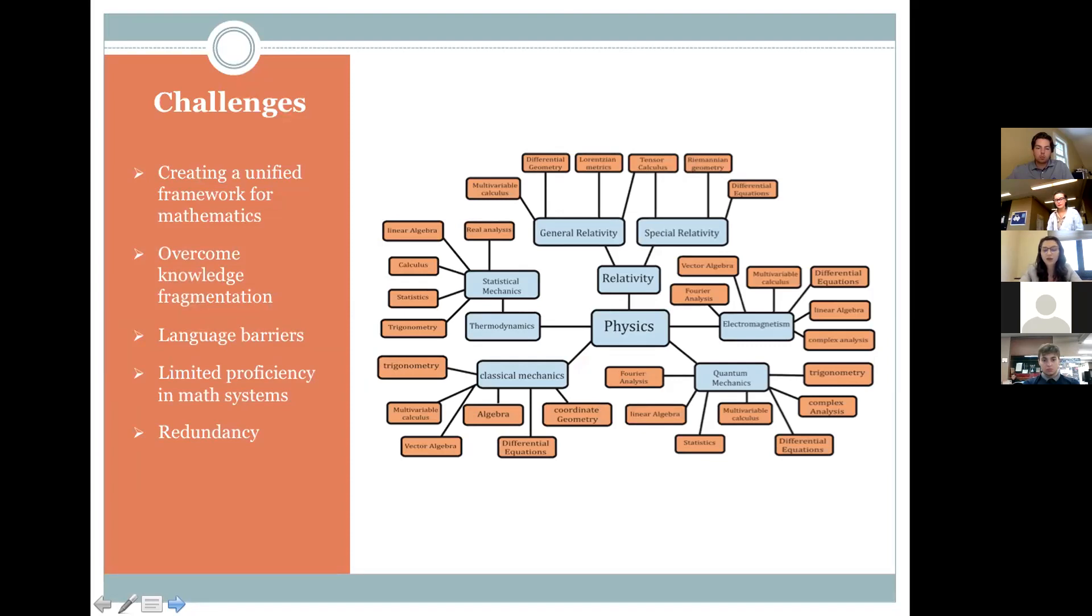In this image on the right, the blue boxes are some of the different branches of physics, and the orange boxes are some of the type of math that those branches use. So you can see there's a lot of the same math used for multiple branches, like linear algebra, trigonometry, and calculus, for example. This overlapping knowledge between the systems hints that there might be a better way to connect similar ideas within our structures.